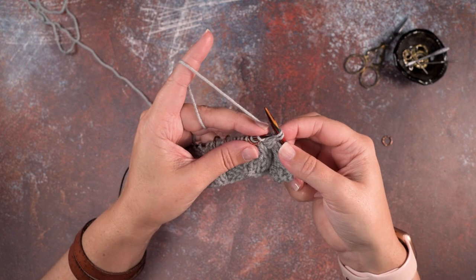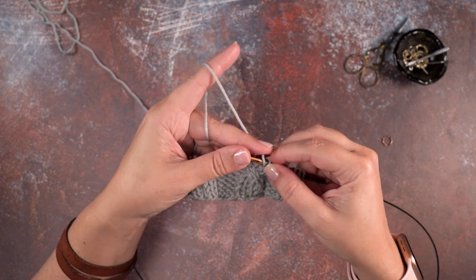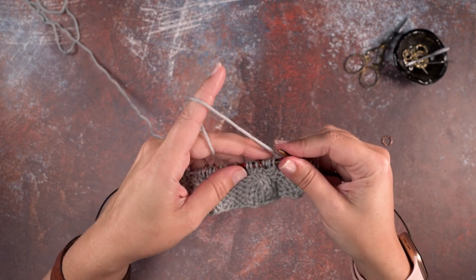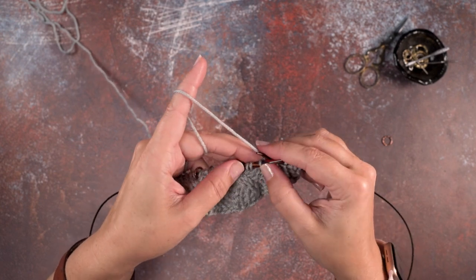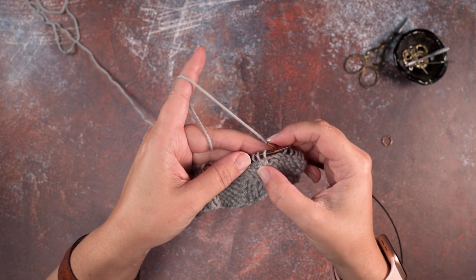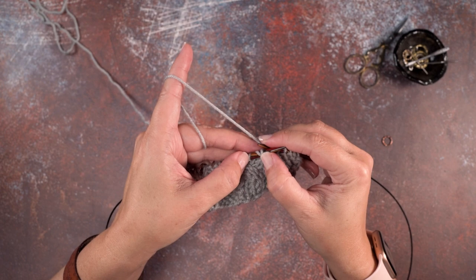Now we can rotate our work and place those two knit stitches that we inserted our needle into back onto our left hand needle. So essentially we've reorganized those stitches so that we have them twisted where the two knit stitches are crossing over the purl stitch.